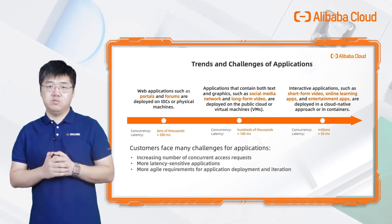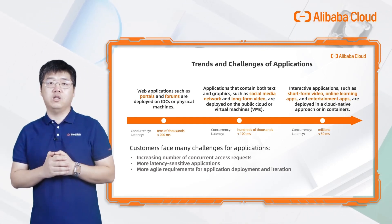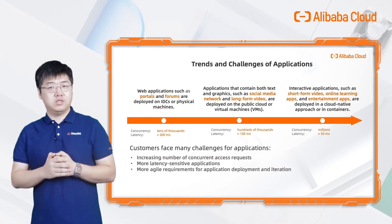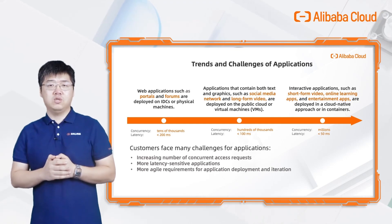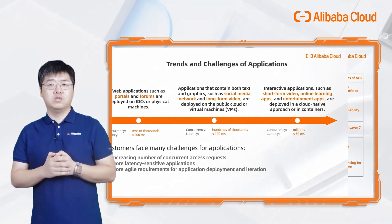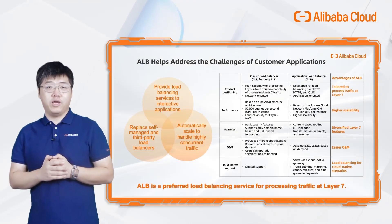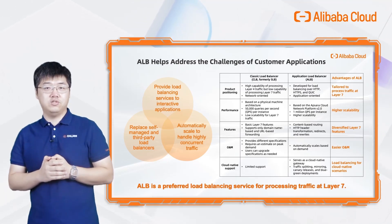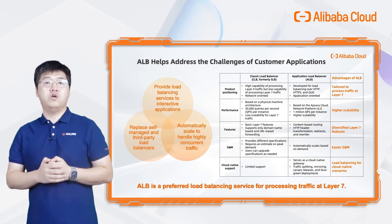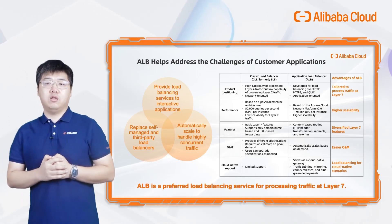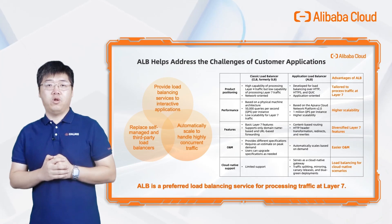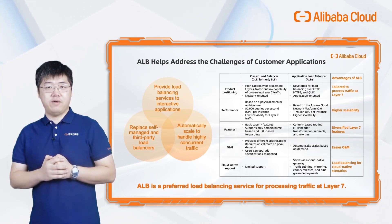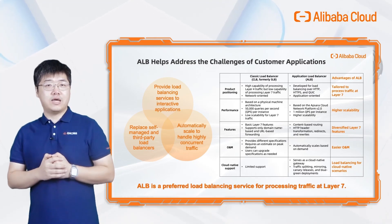Some of our customers know that Alibaba Cloud launched Server Load Balancer, aka SLB, in the early days. But as applications continue to evolve, SLB is no longer sufficient, so now we are introducing Application Load Balancer, aka ALB, to help customers address those challenges. As shown in the picture, ALB is ideal for three scenarios: latency-sensitive Layer 7 load balancing, replacing self-built third-party load balancers, and large concurrent applications that require automatic capacity scaling.